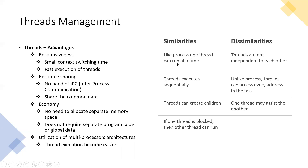Similarities with processes include: like processes, one thread can run at a time — one executor thread is executed at a time. Threads execute sequentially. Threads can create children — we can create one thread from another thread, similar to how one process can be created from another process. If a thread is blocked, another thread can run. This is the similarity point of view.